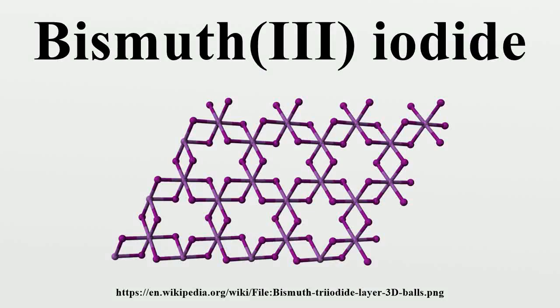Bismuth iodide is the inorganic compound with the formula BiI3. This grey-black solid is the product of the reaction of bismuth and iodine, which once was of interest in qualitative inorganic analysis.